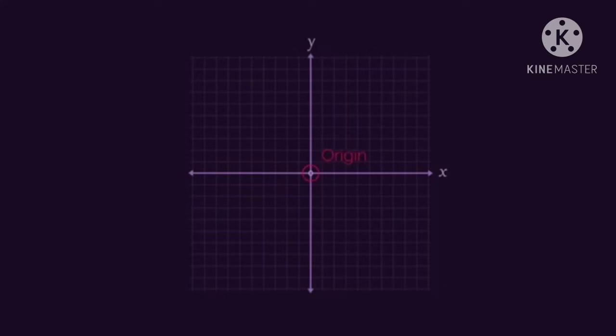This is known as the origin, with the positive numbers going in these directions, and the negative numbers going backwards and downwards.